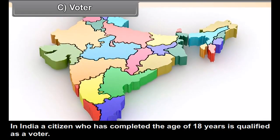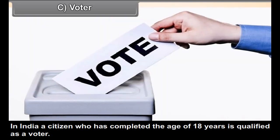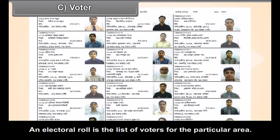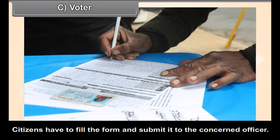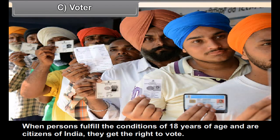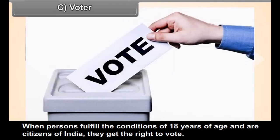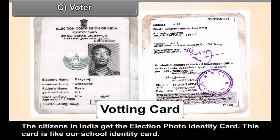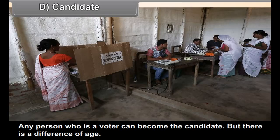In India, a citizen who has completed the age of 18 years is qualified as a voter. It is necessary to register the name of the citizen in the electoral roll, which is the list of voters for a particular area. Citizens fill a form and submit it to the concerned officer. This form is available on the website of the Election Commission of India and State Election Commission websites. Citizens in India get an election photo identity card; other identity proofs like a ration card or driving license are also accepted.